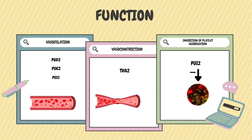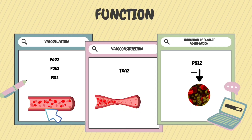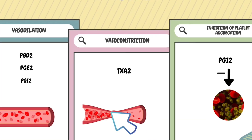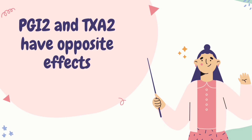Prostaglandin D2 and prostaglandin E2 cause vasodilation. Prostaglandin I2 causes vasodilation and inhibition of platelet aggregation. Thromboxane A2 causes vasoconstriction. Have you noted that thromboxane A2 has effects opposite to those of prostaglandin I2?